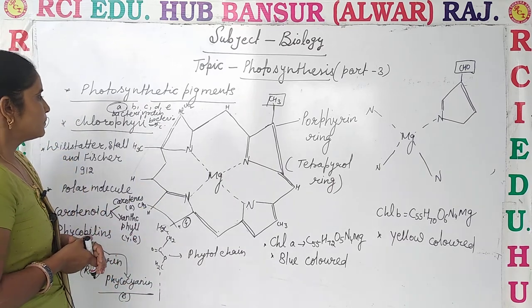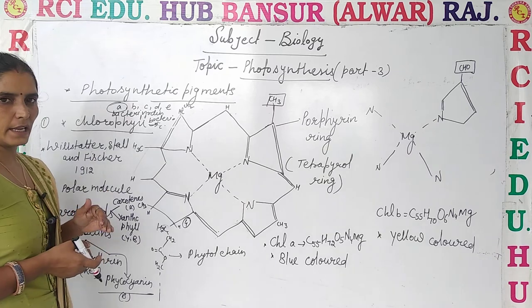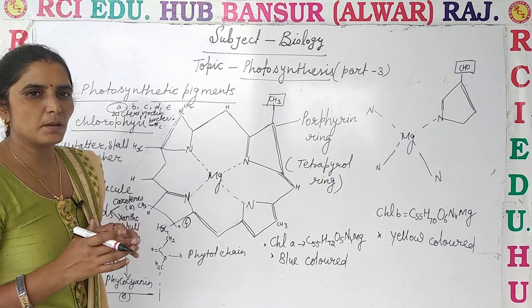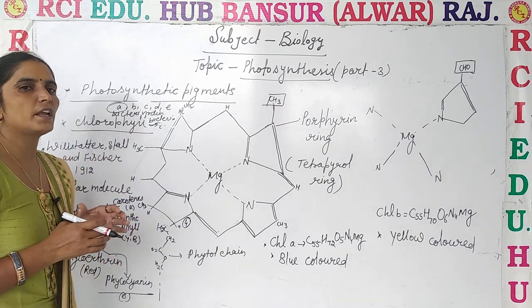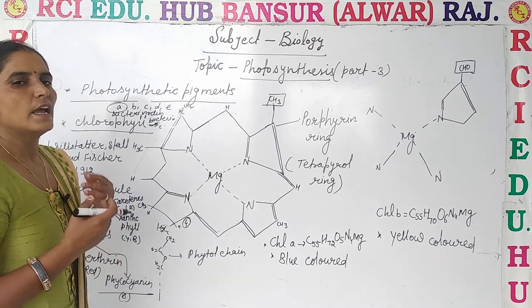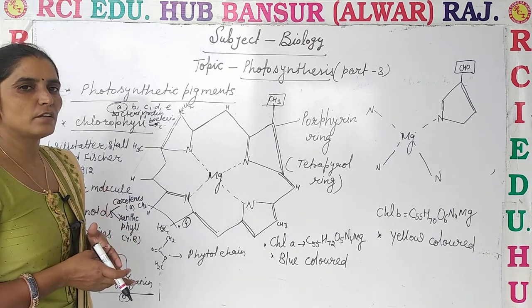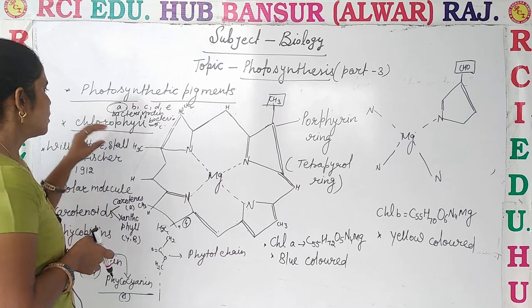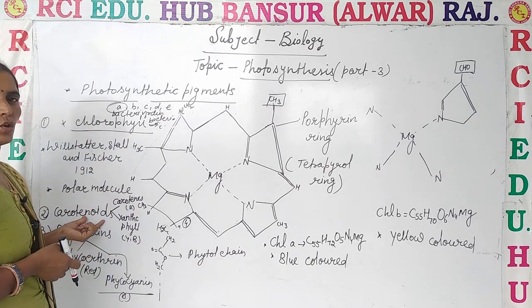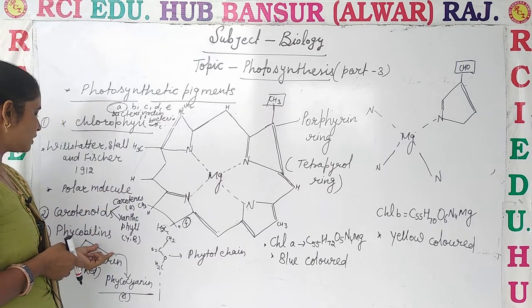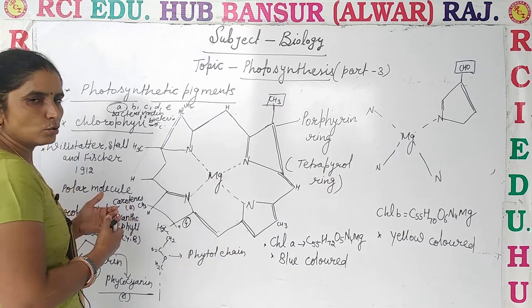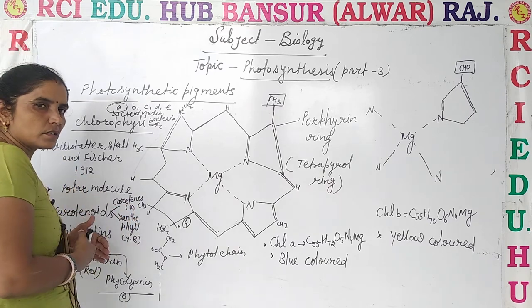So before going ahead, mainly 3 major pigments play an important role in the absorption of sunlight and take part in photosynthesis. Which are those? One is chlorophyll, another is carotenoids, and the third one is phycobillins. We will discuss those later on.